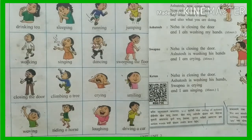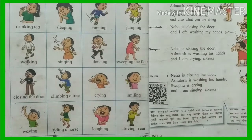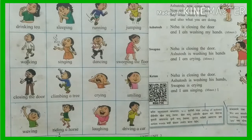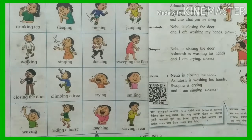Next picture: Waving. Waving means Hath hallowne. Next picture: Riding a horse. R-I-D-I-N-G. Riding means haakne or chalne — Ghoada haakne. For example, riding a bicycle or riding a horse. Riding a motorcycle also means chalne. Next picture: Laughing. Laughing means Mothya ne hasne.